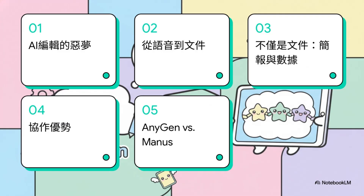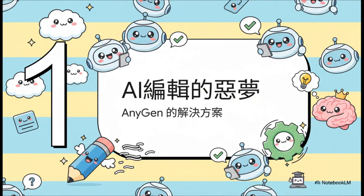今天我们要聊聊Anygen，就是字节跳动新出的一个AI工作空间。我们会先谈AI编辑噩梦这个大家都遇过的痛点，再看看Anygen怎么把声音变成文件、简报，甚至数据图表，深入分析它的协作功能，最后把它跟Manus摆在一起比较。